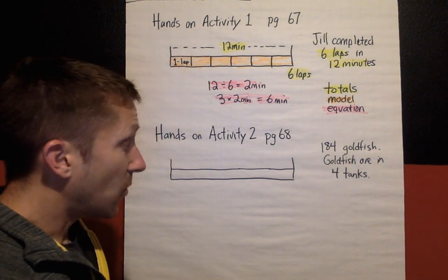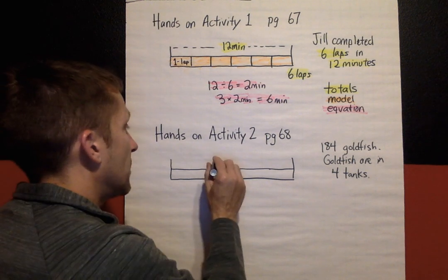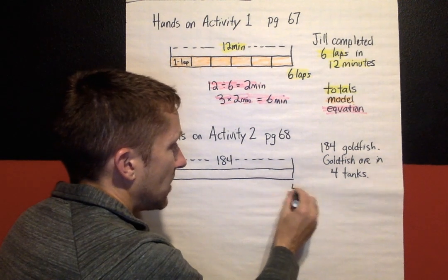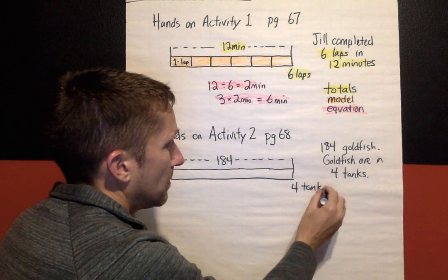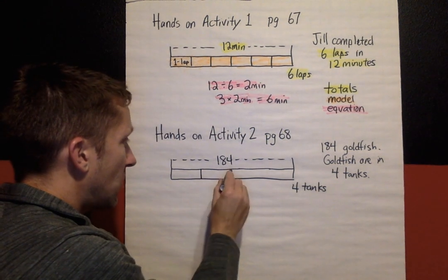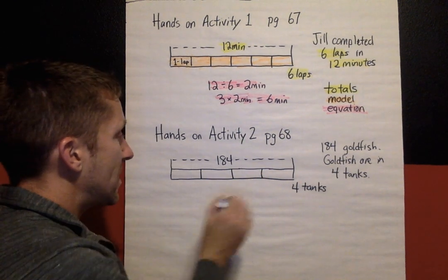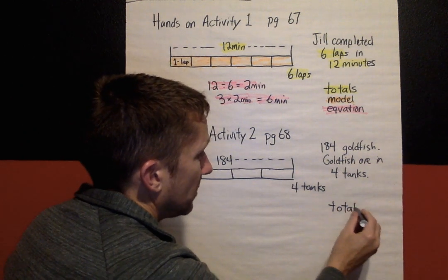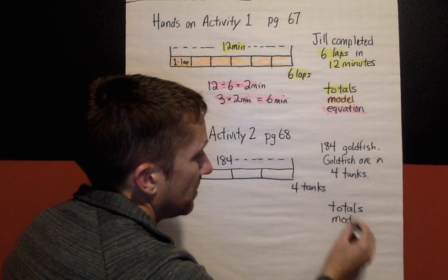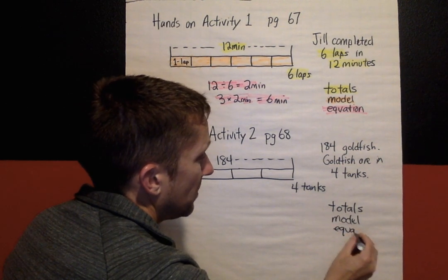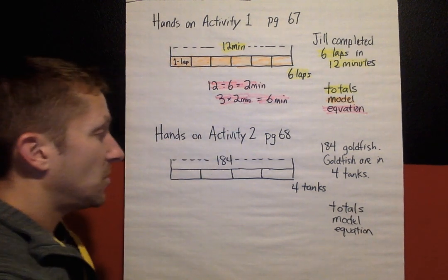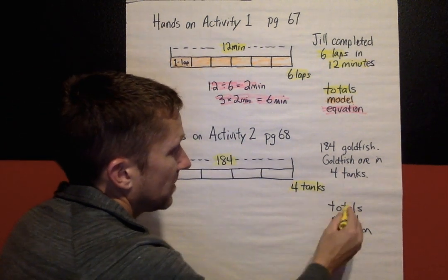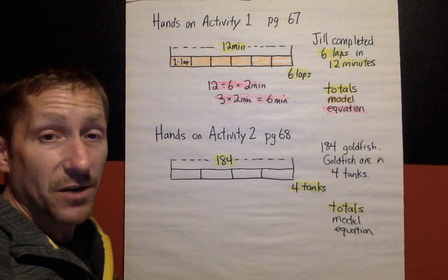So here is what we know: 184 goldfish, the goldfish are in four tanks. In my model, I'm going to say that this bar represents 184 goldfish — that's one total — and it also represents four tanks. I'm going to divide the bar into four same-sized pieces. There are my tanks: one, two, three, four. So again, look at each problem — identify the totals: 184 fish, four tanks. Those are my totals from the ratio that's in the text.